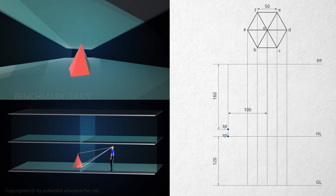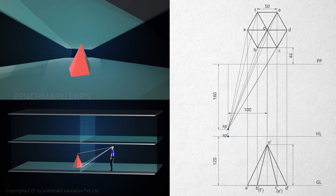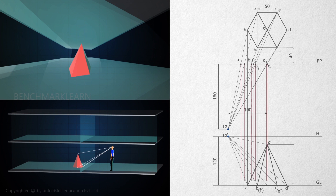Now draw the top view to get the front view of the pyramid. Name the bottom corners and apex. Draw visual rays from the top view to SP and visual rays from the front view to SP dash. Mark the piercing points of these rays on the top view with the picture plane as A1, B1, C1, D1, E1, and F1. Project these points downwards to meet the respective visual rays, then connect all the points to get the perspective projection of the pyramid.